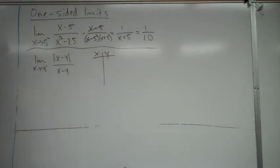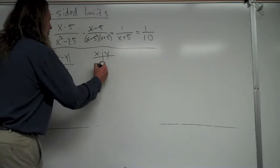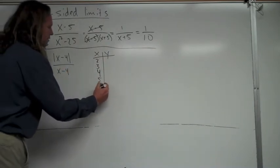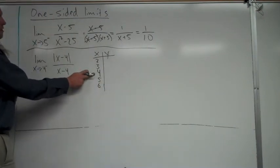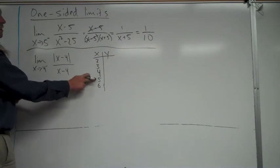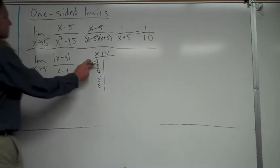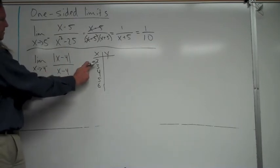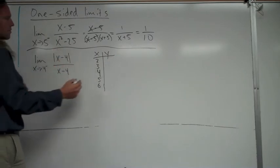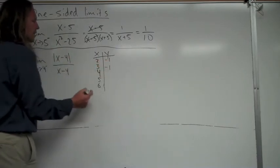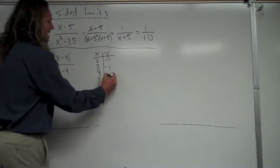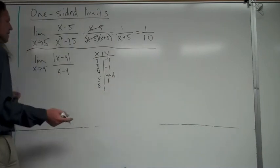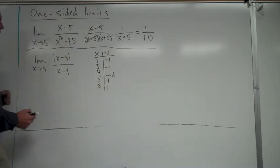I'll center my table around x equals 4, choosing a couple of x-values before and after. Plugging in x equals 2 or 3 gives negative 1. At x equals 4, the denominator is 0 — it's undefined. Plugging in x equals 5 or 6 gives positive 1.